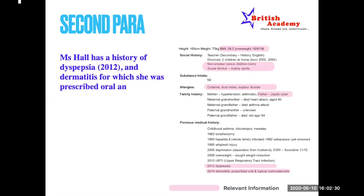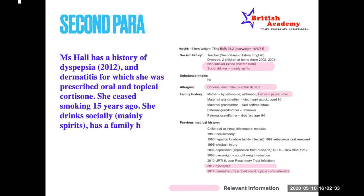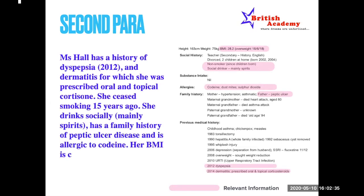Now let's see how to formulate this second paragraph: 'Ms. Hall has a history of dyspepsia in 2012 and dermatitis for which she was prescribed oral and topical corticosteroids. She ceased smoking 15 years ago. She drinks socially mainly spirits, has a family history of peptic ulcer disease, and is allergic to codeine. Her BMI is currently 28.2.' This is how you formulate your second paragraph — taking only information relevant to the current situation or required by the target reader.